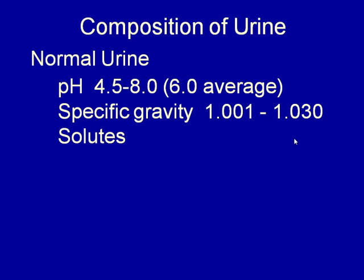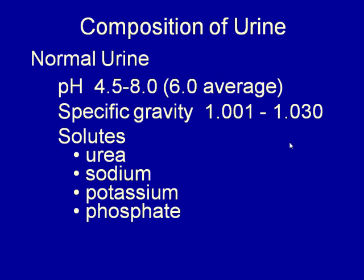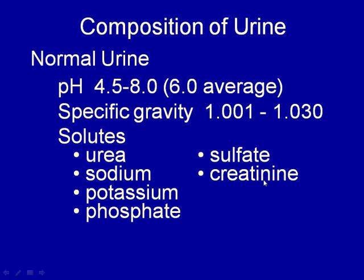Urea is one of the waste products we want to get rid of — it's the result of protein metabolism. Sodium, potassium, phosphates, and sulfates are things we get rid of based on our diet. Creatinine is a breakdown product from muscle activity that we need to excrete in the urine. Uric acid is another nitrogenous waste product from protein metabolism. So urea, creatinine, and uric acid are the three nitrogenous waste products primarily found in urine, along with other ions like calcium and magnesium, which are present based on how much you ingested.